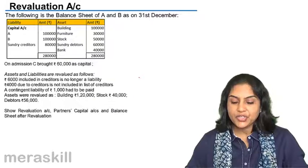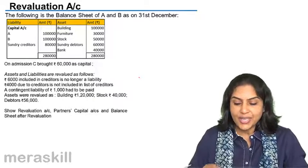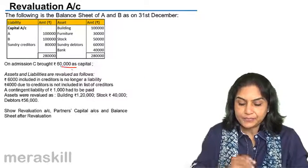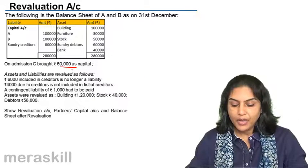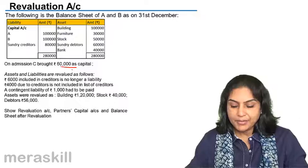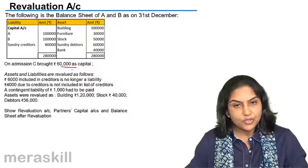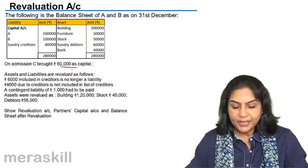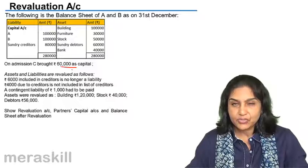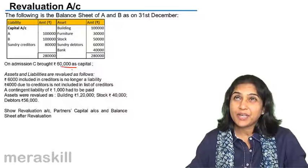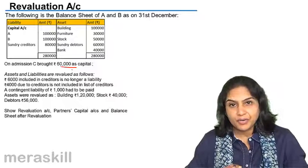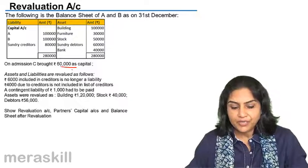On admission, C brought 60,000 as capital. Assets and liabilities were revalued. 6,000 included in creditors is no longer a liability. If it's not a liability, we will remove the liability.